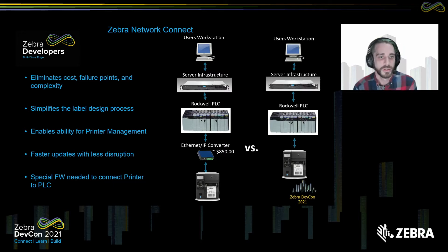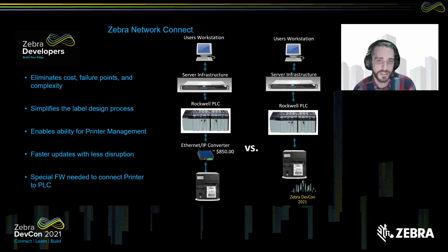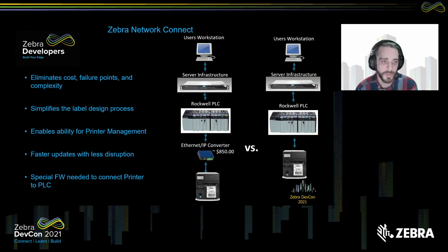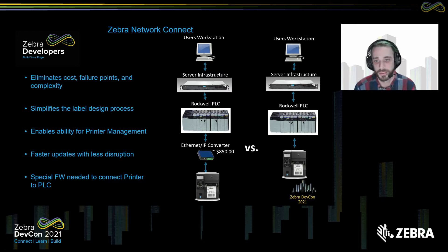In conclusion, Network Connect is a solution that saves you time, energy, and money. By allowing quick updates to templates and labels and completely removing an almost $1,000 purchase per setup, you gain the ability to manage your printer fleet easily and design labels through a GUI instead of a ZPL text document.